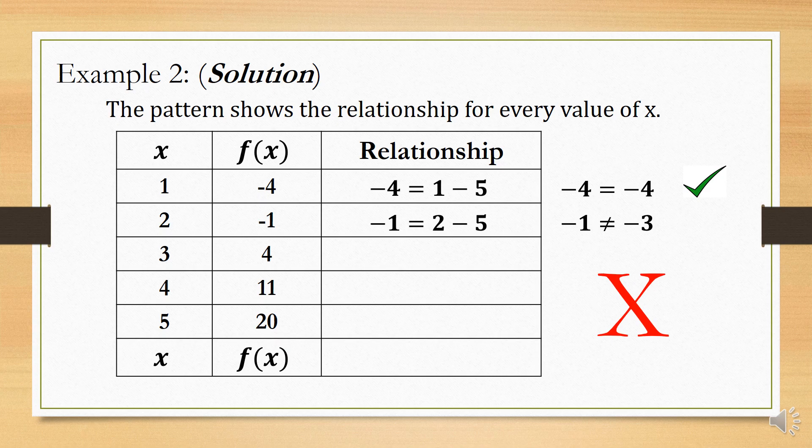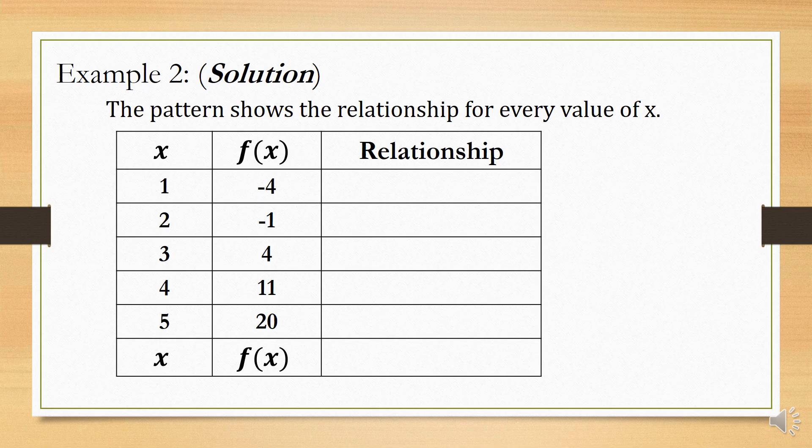So we will not proceed to the next ordered pair. We need to go back and look for another relationship that will satisfy all the given values in the table of values. Let us now look for another pattern that will satisfy the values of x and f. Let us try squaring the value of x to see if it will satisfy.